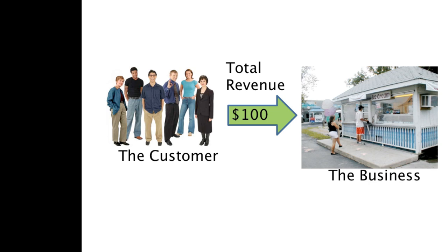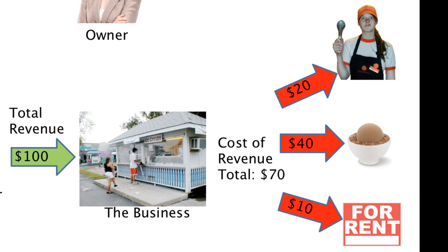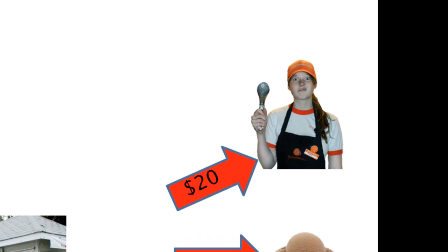The flow of money in one hour: customers go to the business and spend $100 — that's the total revenue. As you go through these figures, remember the terminology because it directly relates to stock investing. That $100 comes into the ice cream stand before we account for any costs. Now let's step inside the business and see where that $100 goes.